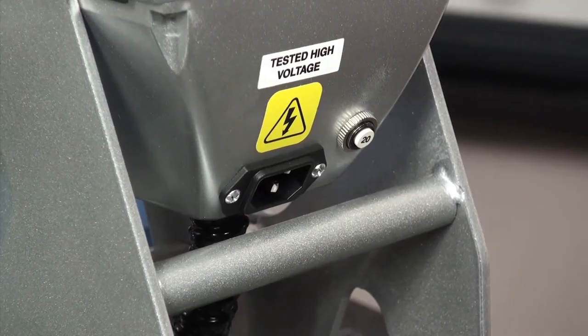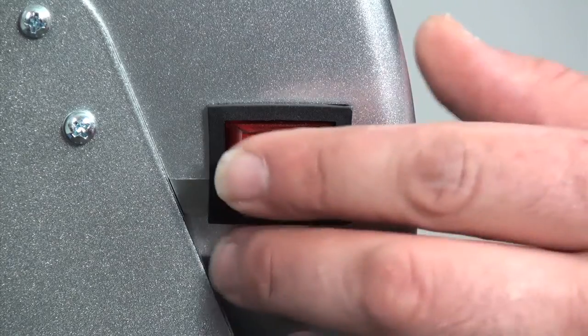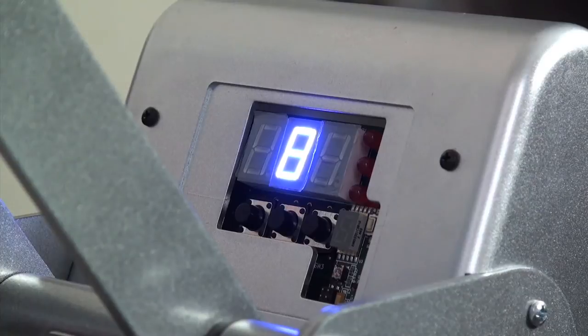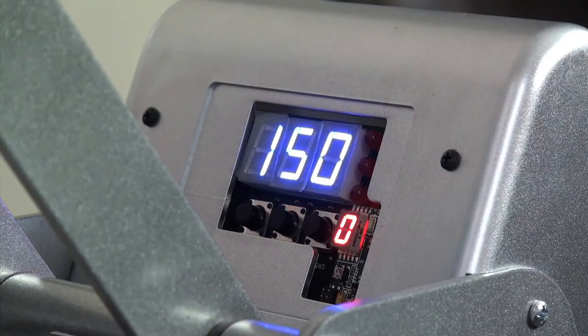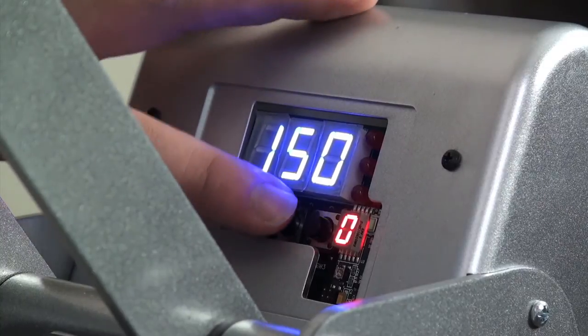Plug the press's power cord into the back of the heat press and the other end into the dedicated outlet. Turn on the heat press. The number displayed shows you the version of the new control board, in this case version 8. You are now ready to calibrate the temperature and pressure.